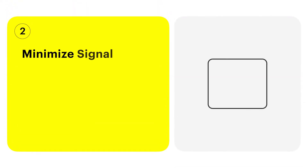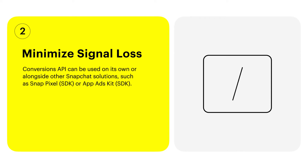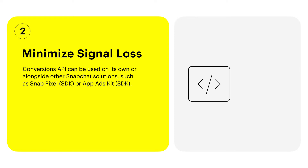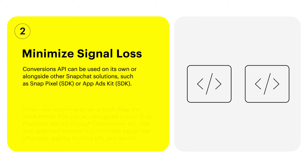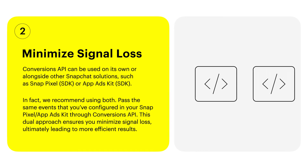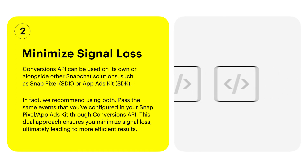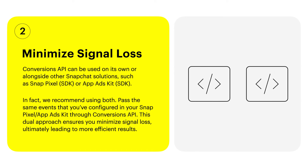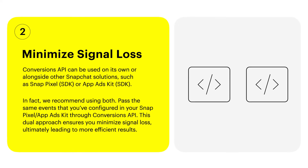Minimize signal loss. Conversions API can be used as a standalone or alongside other Snapchat solutions, like the Snap Pixel SDK or the AppAdsKit SDK. We recommend using both. This allows you to pass the same events through Conversions API that you've configured in your Snap Pixel and AppAdsKit. This dual approach ensures minimal signal loss.